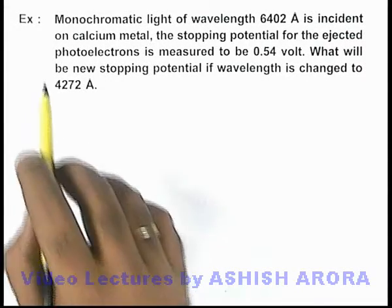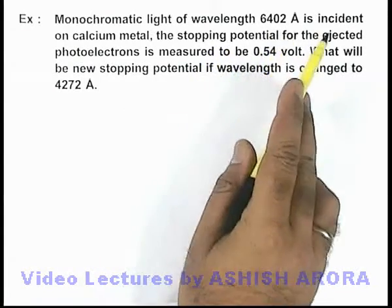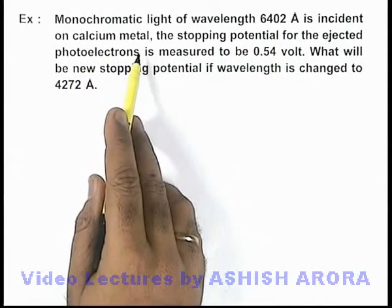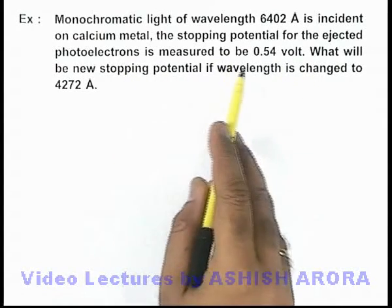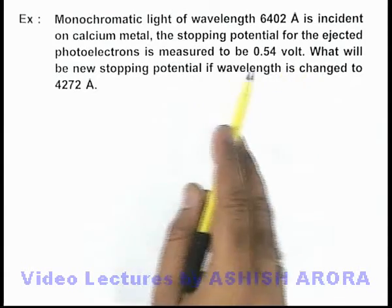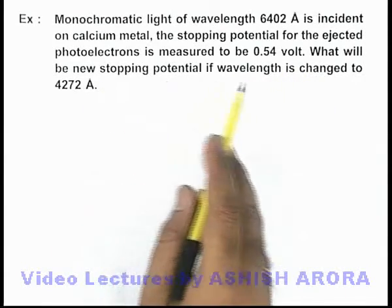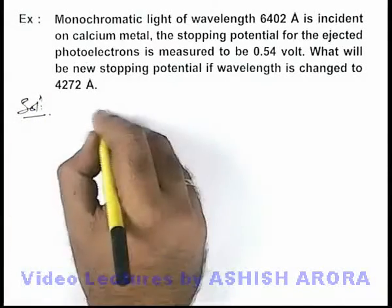In this example we are given that a monochromatic light of wavelength 6402 angstrom is incident on calcium metal, and the stopping potential for the ejected photoelectrons is measured to be 0.54 volt. Now we are required to find what will be the new stopping potential if the wavelength is changed to 4272 angstrom in this situation.